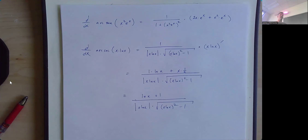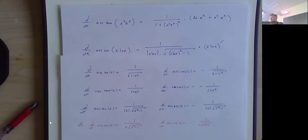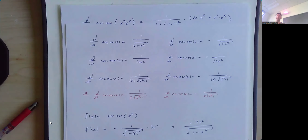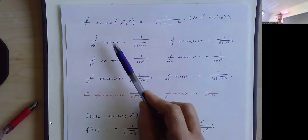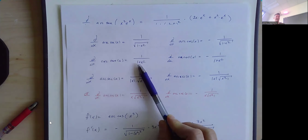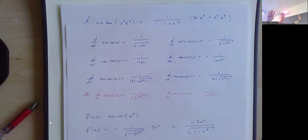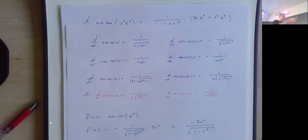One thing worth pointing out: there's a beautiful connection between the derivatives of inverse trig functions and trig substitution in Calculus B. When you see 1 minus x squared, you'll use sine; 1 plus x squared, tangent; x squared minus 1, secant. Knowing these derivatives now gives you extra bonus knowledge for trig substitution later.